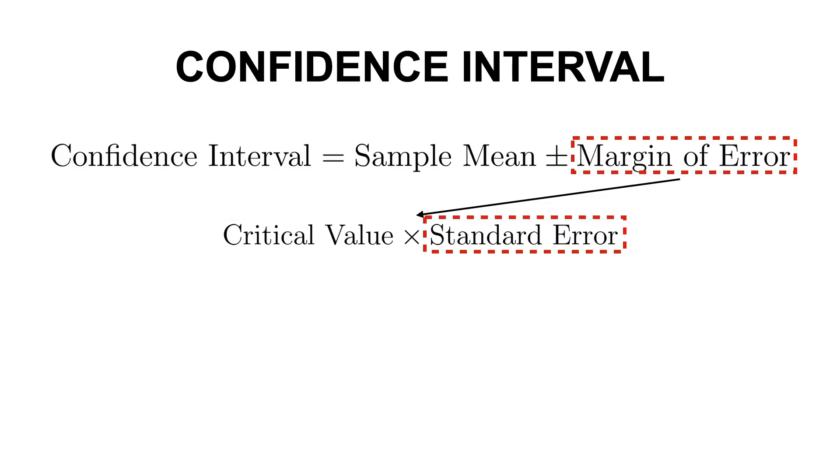And secondly, the margin of error depends on the variability in your data. If your data is all over the place, your margin of error grows. That's given by the standard error, which is equal to the standard deviation of your sample, or your population, divided by the square root of n.